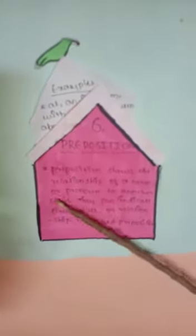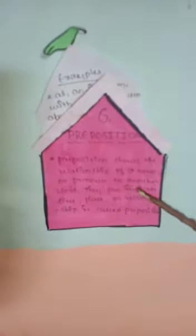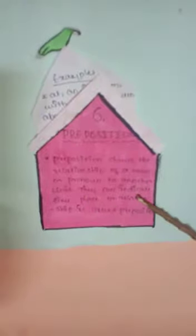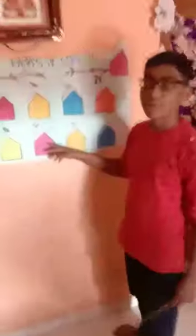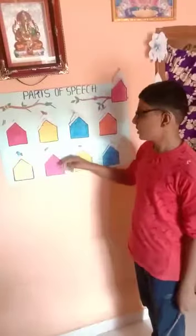Preposition. A preposition shows the relationship of a noun or pronoun to another word. They can indicate time, place, or relationship. It is called a preposition.